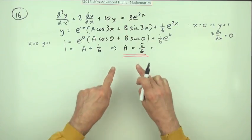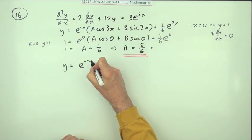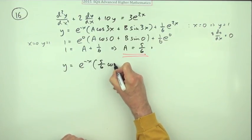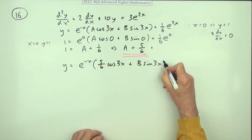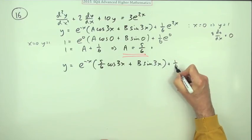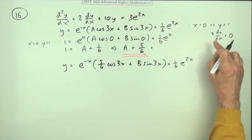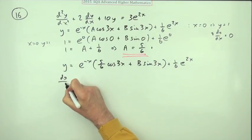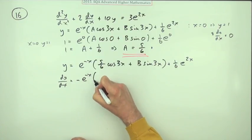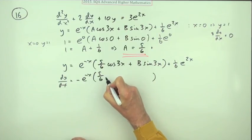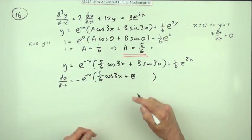Which means that a equals one minus one sixth, a equals 5/6. That's a mark. Now you know what a is, you can just pop it in. So that means this is now reduced to y equals e to the negative x times 5/6 cos 3x plus b sine 3x plus 1/6 e to the 2x. Now to use this one we'll have to differentiate that. So dy by dx will be negative e to the negative x times 5/6 cos 3x.